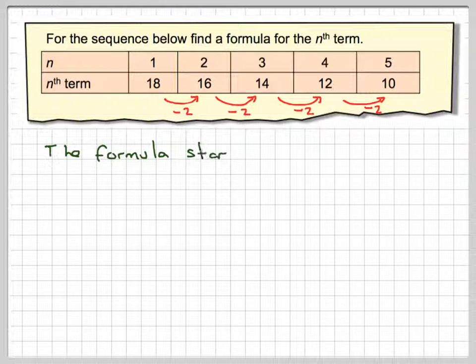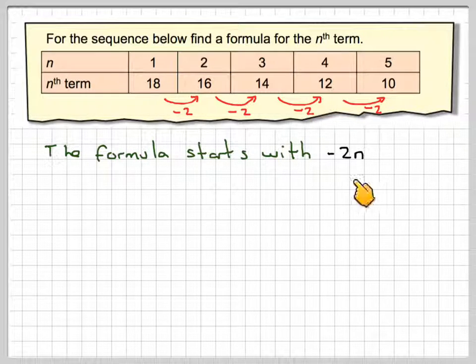So, if that is so, my formula will begin with minus 2n. But what have I actually added in?